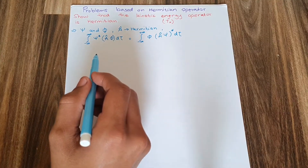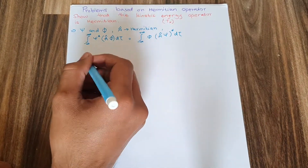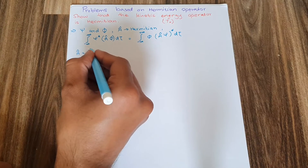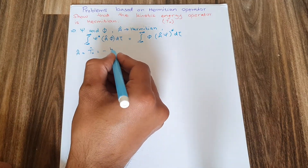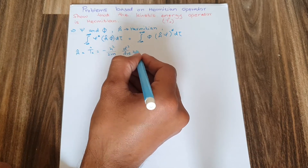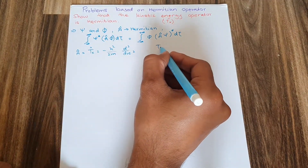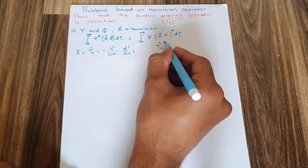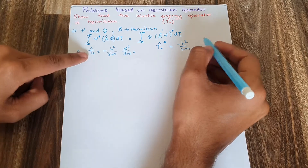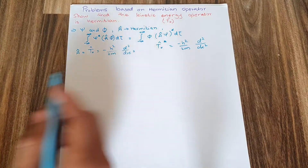Now, first of all, we write the equation for kinetic energy. We take operator A to be equal to the kinetic energy operator Tx, which has a value of minus h-bar squared over 2m times d-squared over dx-squared. If we take the complex conjugate of this value, it will also be the same, since the kinetic energy operator does not contain any imaginary value.